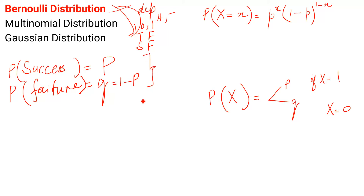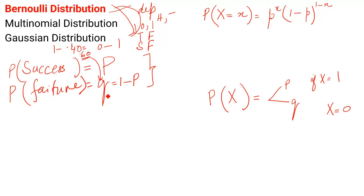Students sometimes become confused. Suppose a question says the probability of success is 0.40. Students sometimes say the probability of failure is not given — how can we solve the problem? Keep in mind that probability lies between 0 and 1. To find q, you only subtract: 1 minus 0.40 equals 0.60. That 0.60 is your q. Similarly, if q is given, subtract 1 minus q to find p.